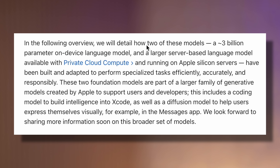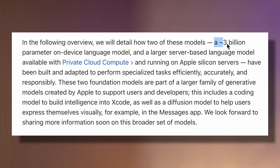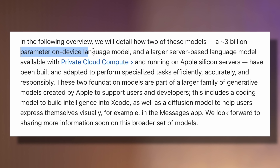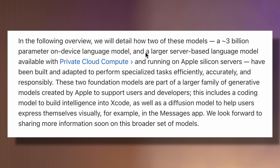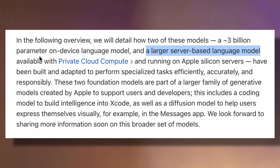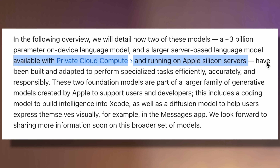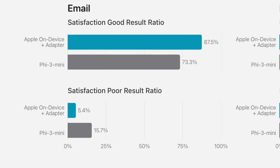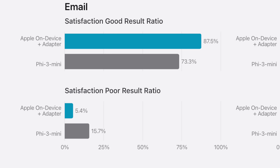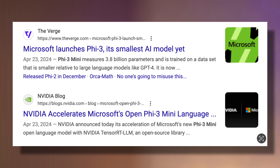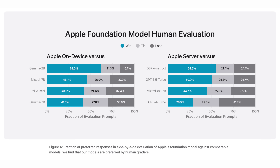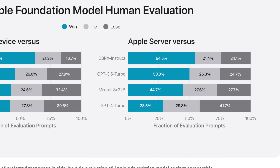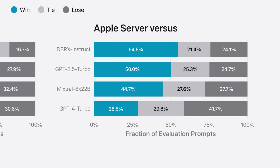Apple specifically tested two of their models: a 3 billion parameter language model running on-device, and a larger server-based language model available with their new Private Cloud Compute. With both of them, they scored a higher human satisfaction rating than Microsoft's recently launched Phi-3 Mini AI model, which is accelerated by NVIDIA GPUs. It also tied or beat all of these other language models most of the time, including OpenAI's GPT-4 Turbo.